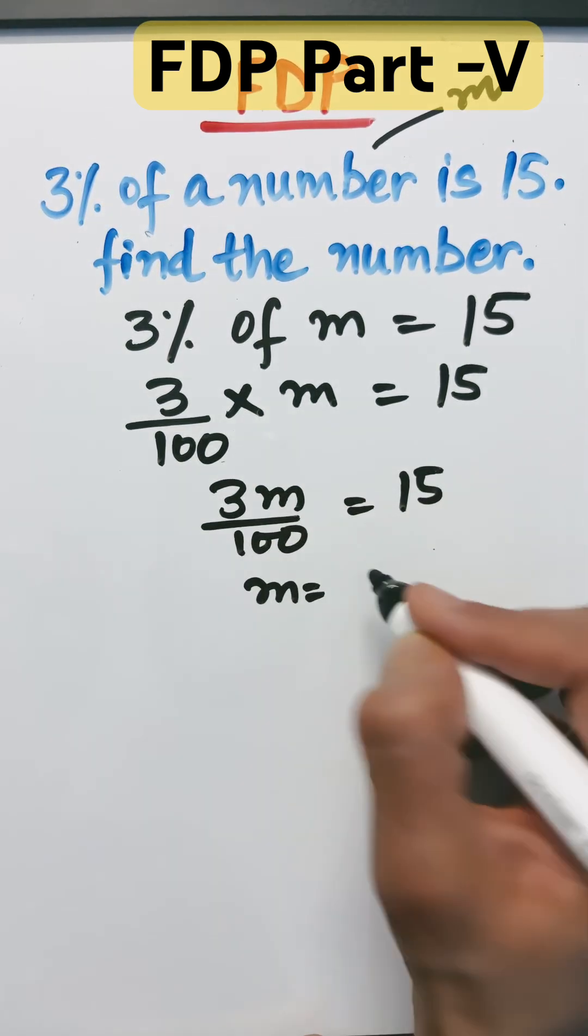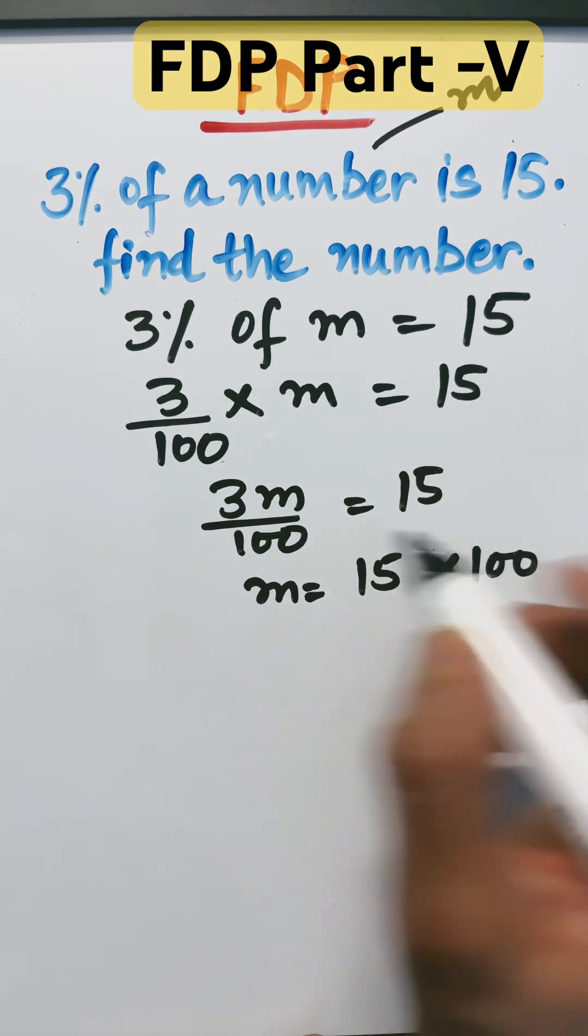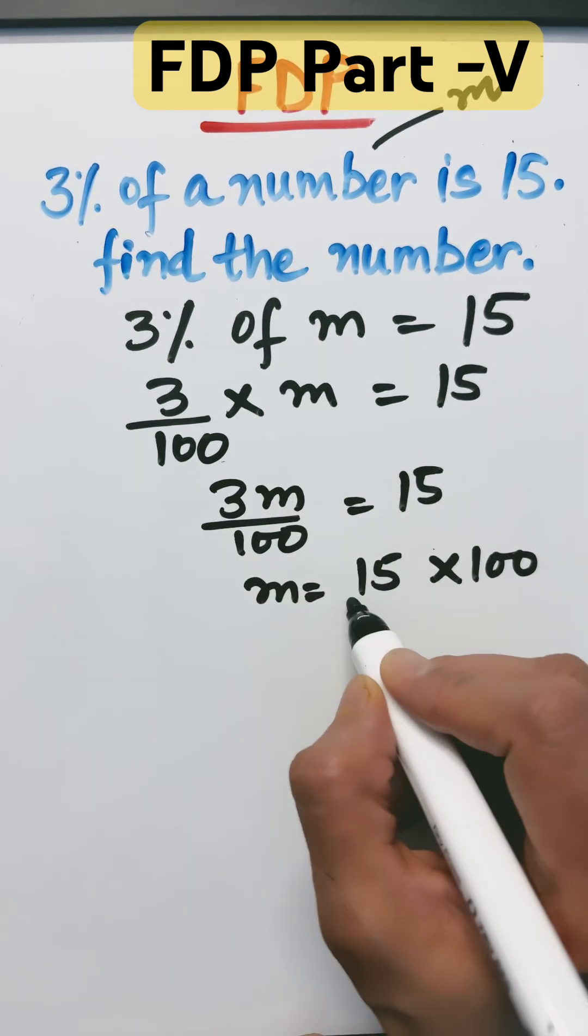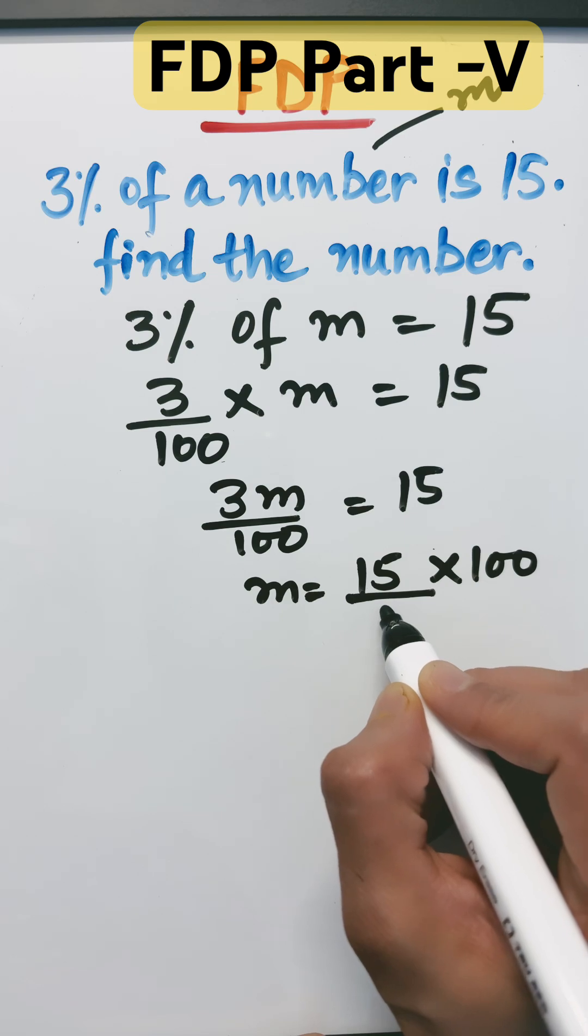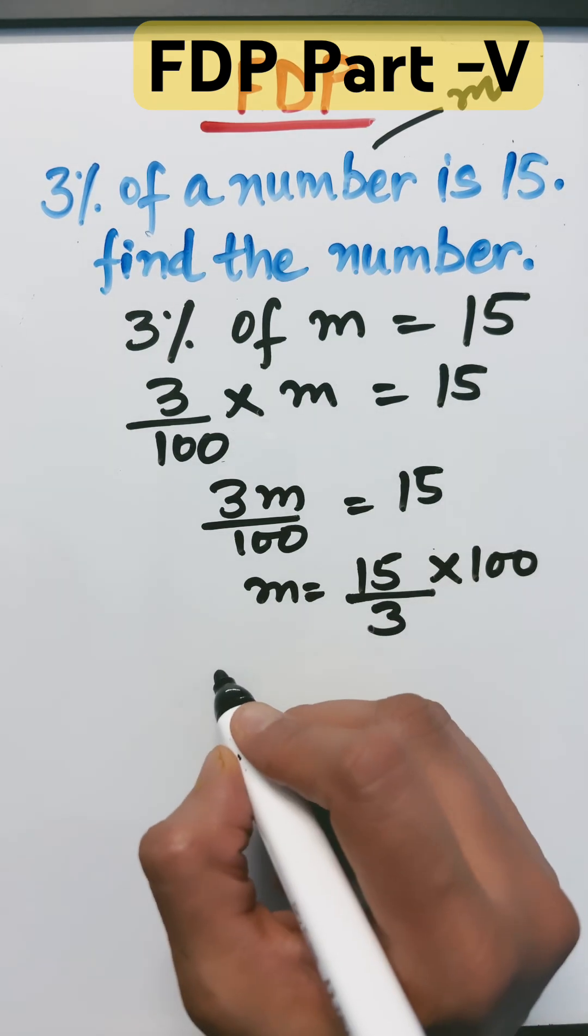So m would be 15. This 100 is being divided, so it will shift there with the sign multiply, and 3 is being multiplied with m, so it will shift on that side with the sign of division. 15 divided by 3 is 5. 5 times 100 is 500.